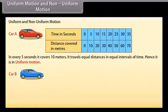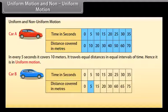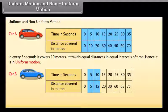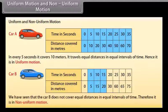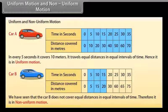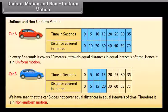Now look at car B. Car B covers 5 meters in 5 seconds, 15 meters in 10 seconds, and 20 meters in 15 seconds. Car B does not cover equal distances in equal intervals of time. Therefore it is in non-uniform motion.